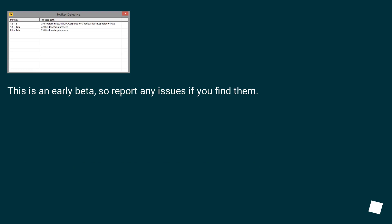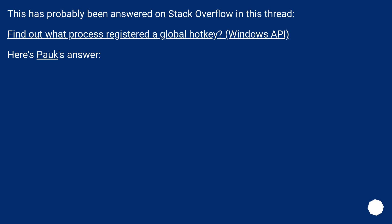Report any issues if you find them. This has probably been answered on Stack Overflow in this thread: 'Find out what process registered a global hotkey?' Windows API.